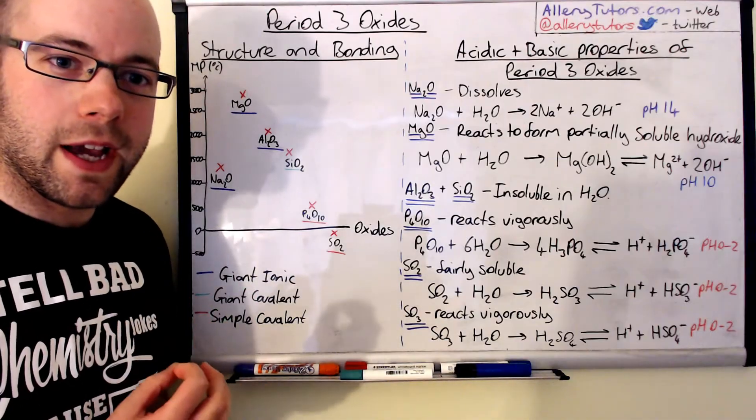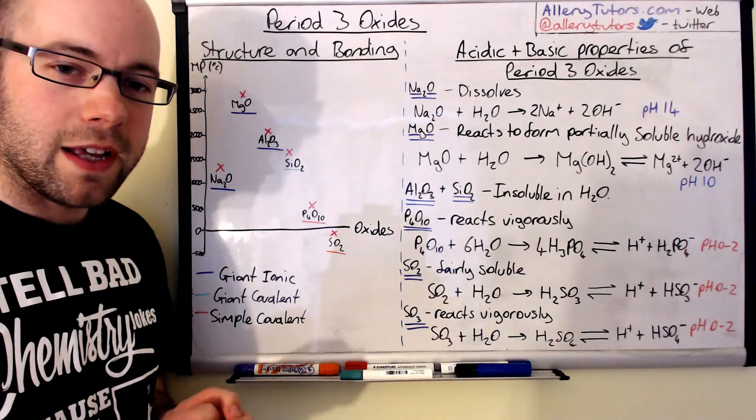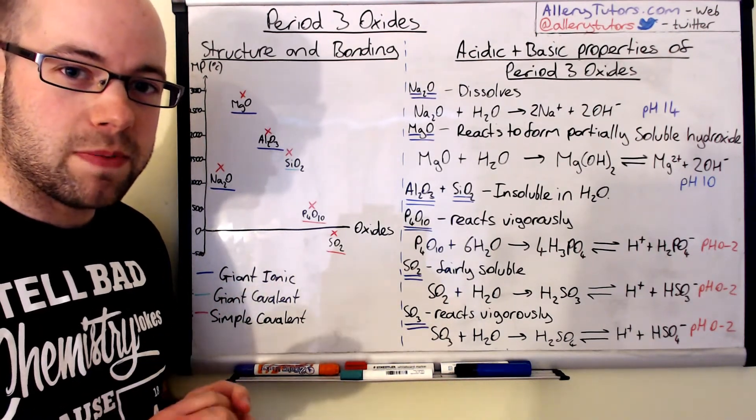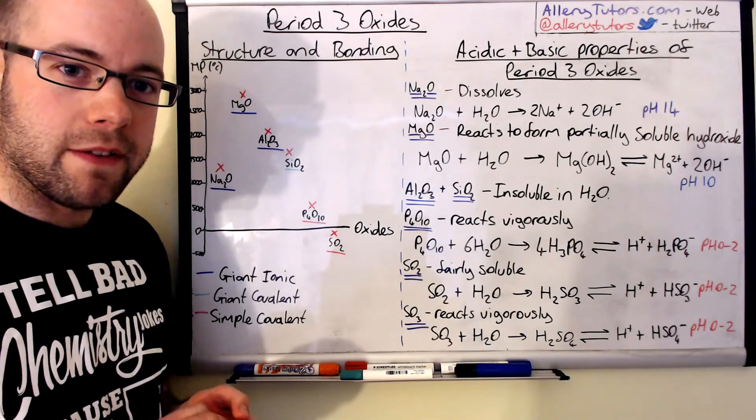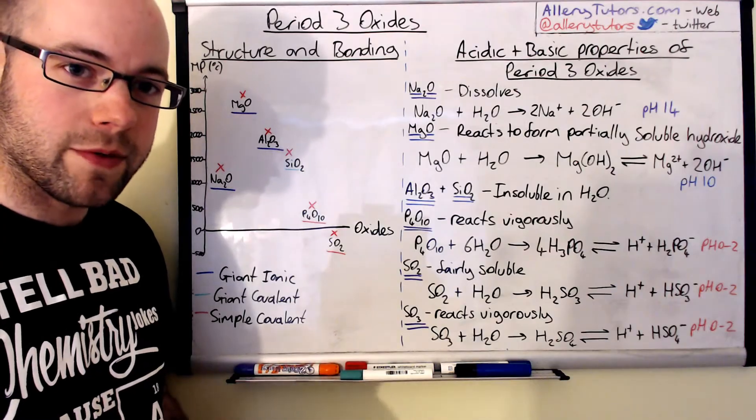So we're going to start with the structure and bonding bit first. Oxides on period 3 exist in different forms as I'm going to show you on here, and you do need to be able to explain the variation in melting points according to how they're structured and the type of bonding they have as well.